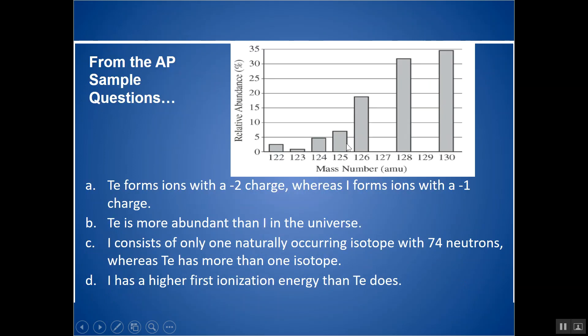So here I'm just looking at individual atoms. I'm saying, okay, TE forms a minus 2 charge, whereas I forms minus 1. That would have no impact on this mass spec. TE is more abundant than I in the universe. That wouldn't really be answering the question here.